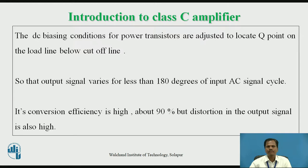Let us get a basic introduction of the Class C power amplifier. In a Class C power amplifier, the DC biasing conditions for the power transistor are adjusted to locate its DC operating point below the cutoff line, so that the output collector current signal varies for less than 180 degrees of the input AC signal cycle. The conversion efficiency of Class C power amplifier is very high — about 90% — but distortion in the output signal is also high.